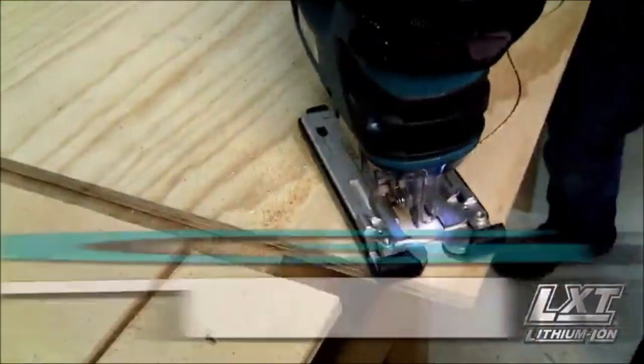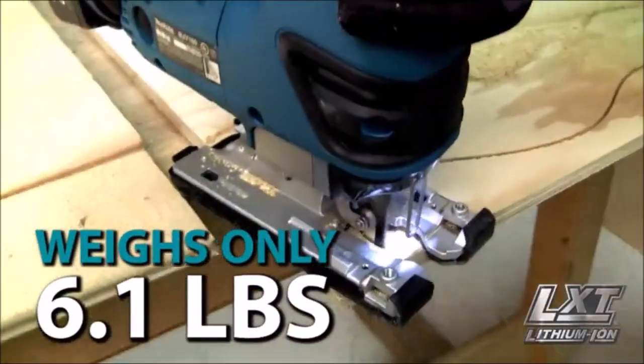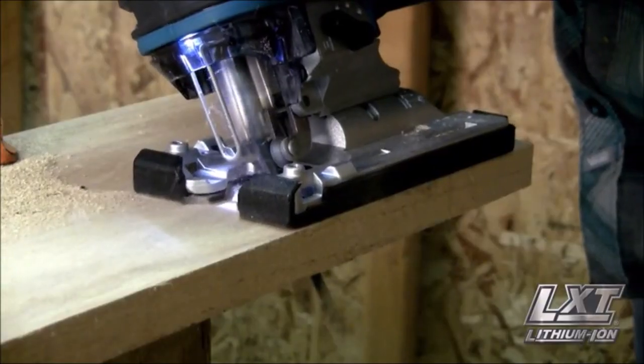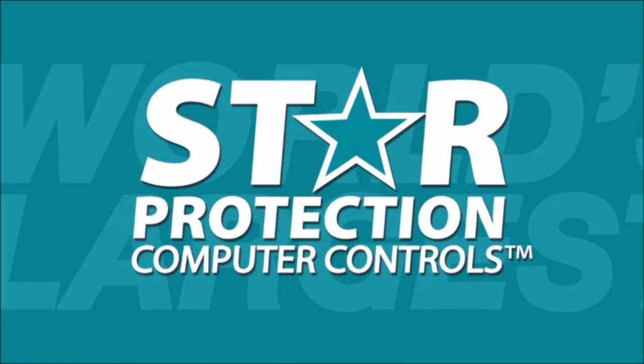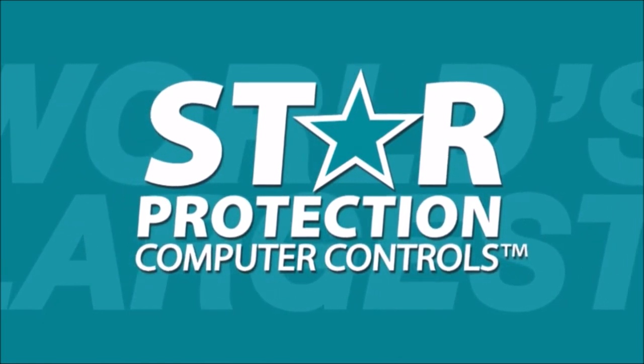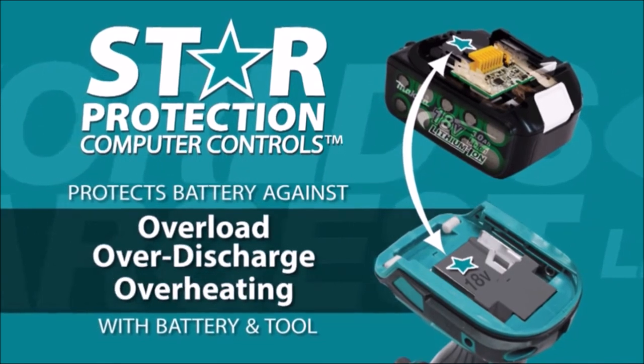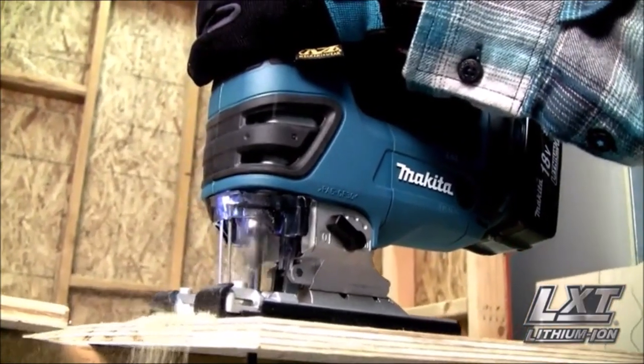Star Protection is communication technology that allows the Star Protection equipped tool and battery to exchange data in real time and monitor conditions during use to protect against overloading, over-discharging, and overheating.